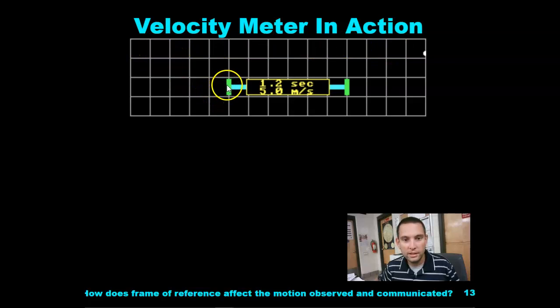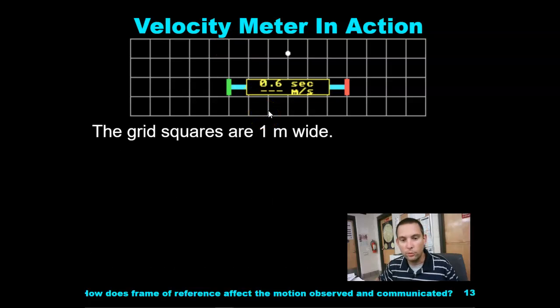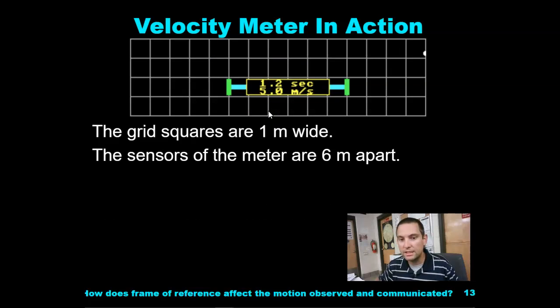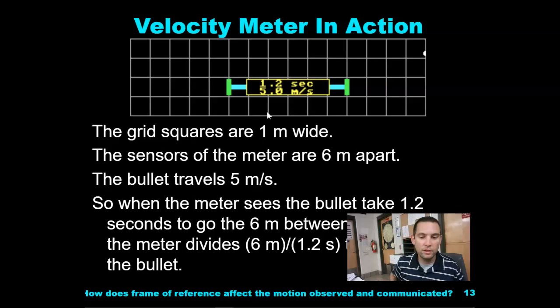So here we go. This is an object moving across the screen. Here's our first sensor. You see it starts as soon as the ball crosses this line right here. The grid squares are one meter wide. The sensors are six meters apart. The bullet travels five meters per second. So when the meter sees the bullet, it takes 1.2 seconds to go the six meters between the sensors. So the meter automatically will divide it, whether using a computer or a lab quest, to get you the velocity of five meters per second.